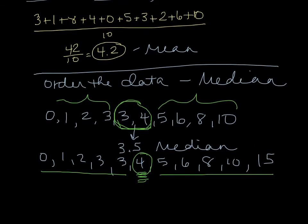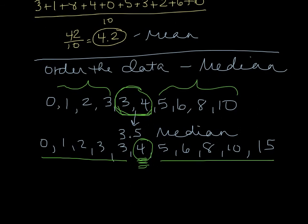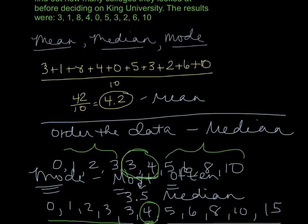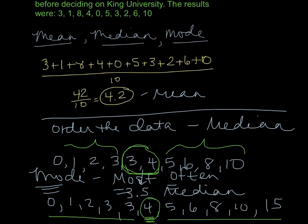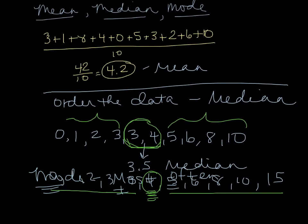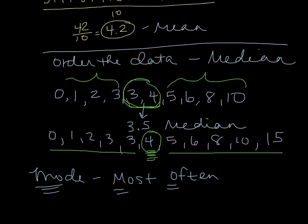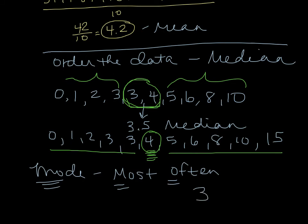The last measure of central tendency is mode. Mode is the one that occurs most often, and so the easiest way to remember that is most often starts with M-O, which are the first two letters in the word mode. So if I scroll back to my list of numbers, my original list of numbers, I want the one that occurs most often. The only number that was repeated is the number three. So that happens to be my mode. In this case, three is the only thing that was repeated, so that occurred most often. So three is my mode.